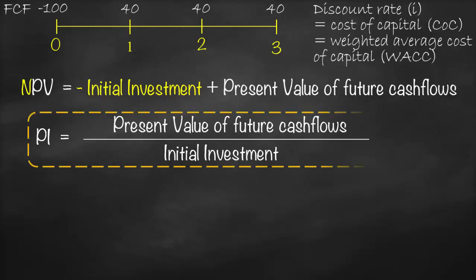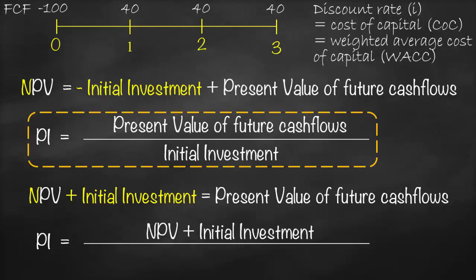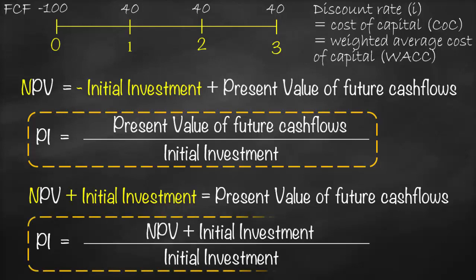Therefore, this will be the first formula of our profitability index. We can return back to our NPV formula. Can we take initial investment and put it on the other side? Yes, we can. Therefore, it would be: NPV plus initial investment is equal to present value of future cash flows. Therefore, in our profitability index formula, we can replace the present value of future cash flows by NPV plus initial investment. So we can rewrite our profitability index formula as net present value plus initial investment divided by initial investment. And this will be our shortcut formula for profitability index if we calculated NPV before.